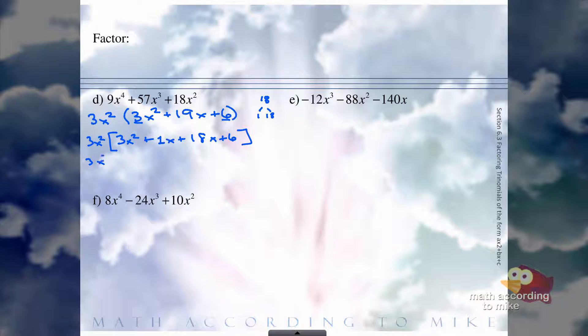And now we'll group 2 by 2. From the first group, we can pull out just an X and we're left with 3X plus 1. From the second group, we can pull out a 6 and we're left with, again, 3X plus 1.